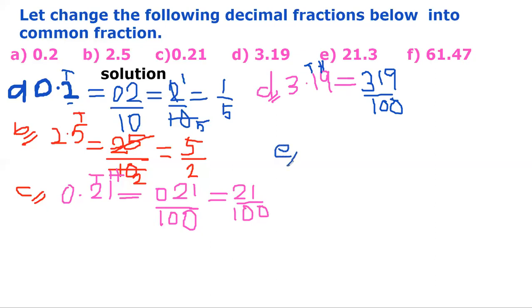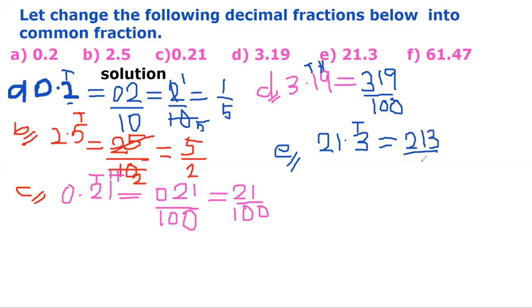Example E: 21.3. The decimal number here has only one digit. Remember, decimal numbers place values start with tens — from the left side of the numbers. Since we have only one number placed under the tenths position, the entire number is divided by 10. So that gives 213 over 10.